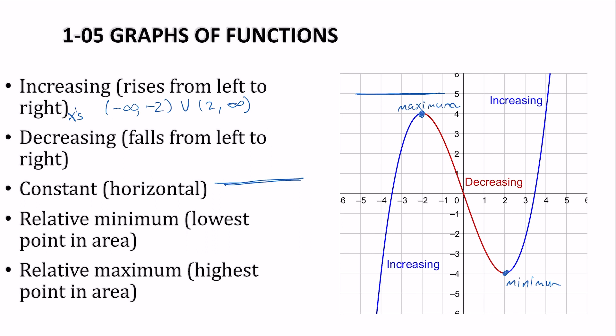Decreasing is just the red part. And again, it's the x-values. We're starting at negative 2 and going to positive 2 in the x's for the red. There is no constant. The minimum looks like it is 2, negative 4. The maximum appears to be negative 2, 4. Now these are points, not to be confused with intervals.